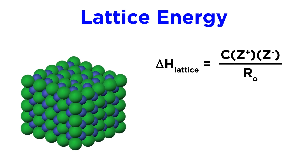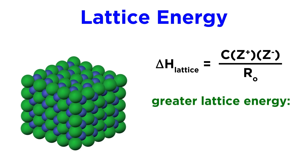We have this R value that represents interionic distance, or how far apart the centers of each ion are from each other. That has to do with the size of the ions, because the bigger they are, the farther apart the centers will be. In order to get a greater lattice energy, we can have larger Z values, because if those Z values get bigger, the fraction gets bigger since they are in the numerator. So greater values for the charges will result in a greater lattice energy.